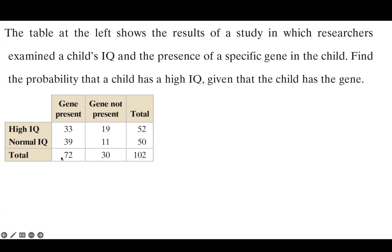On the margins you can see 52, 50, 72, 30, and 102. High IQ: 33 plus 19 gives you 52 total people with high IQ. Normal IQ: 39 plus 11 gives you 50 people with normal IQ. For the gene-present column: 33 plus 39 gives 72 people with the gene. Gene not present: 19 plus 11 gives 30. The summation of 52 and 50 is 102, and the summation of 72 and 30 is also 102.